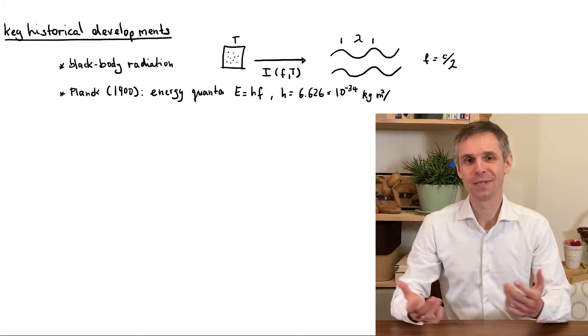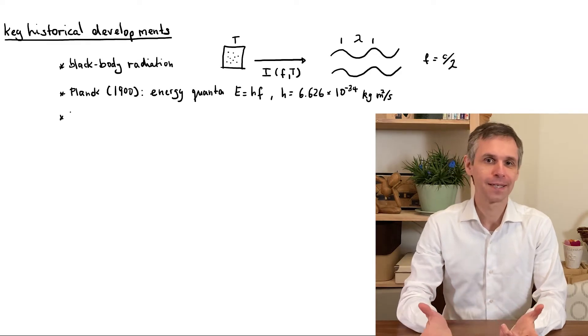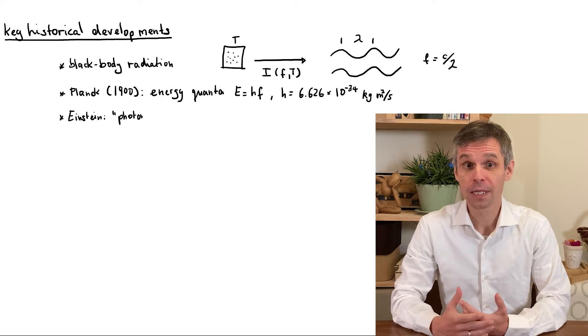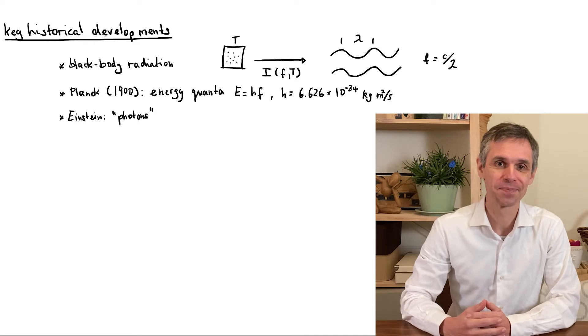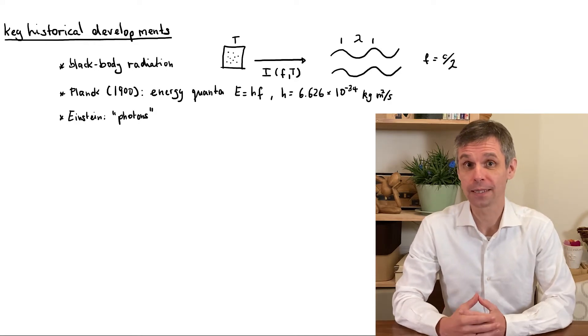While Planck did not provide a microscopic explanation of this quantization, Einstein came up with the idea that these are units of the energy carried by the light wave, which can be thought of as composed of particles, now known as photons. And he utilized this idea to explain the photoelectric effect.